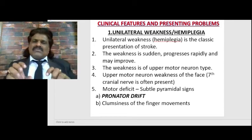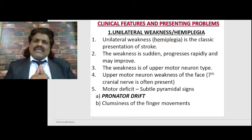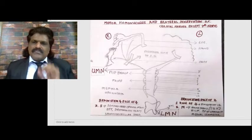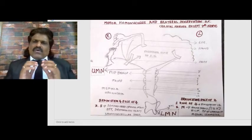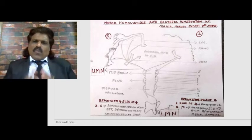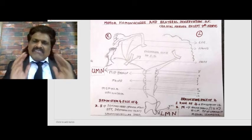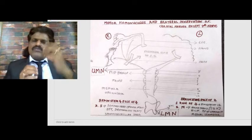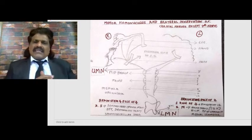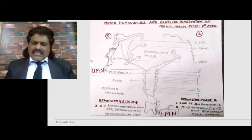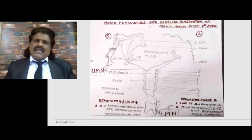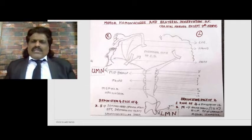Another finding is clumsiness of finger movements, because the corticospinal tract has predilection for extensors, abductors, supinators, wrist extensors, and distal muscles. Distal muscles usually get affected in corticospinal tract lesions. Now we need to understand why only the seventh nerve is affected in a corticospinal tract lesion and why not other cranial nerves - to understand this we need to understand the motor homunculus and bilateral innervation of cranial nerves except the seventh.